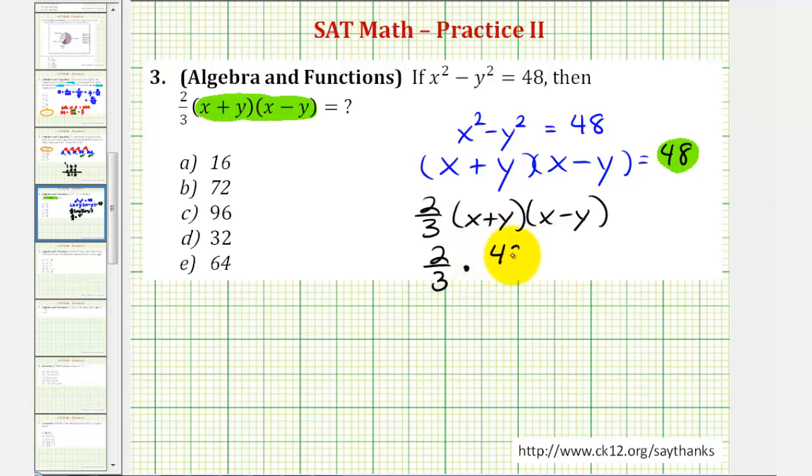This becomes 2/3 times 48, or 48 over 1. Notice in this form we can simplify. Three and 48 have a common factor of three. There's one three in three, and 16 threes in 48. And since our denominator is one, this product is just 2 times 16, or 32. Which means our answer is D, 32.